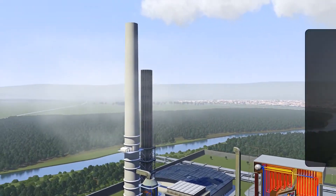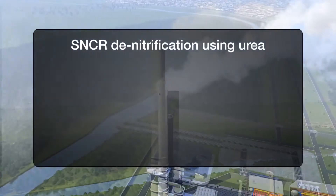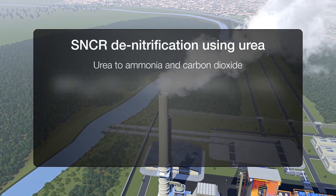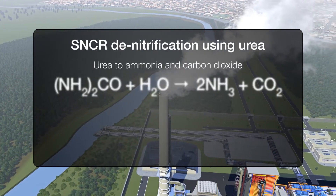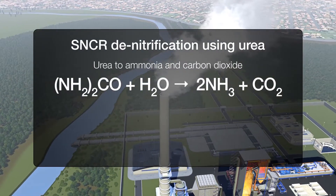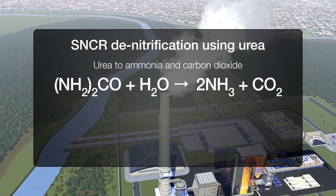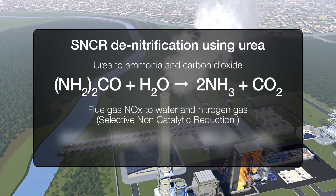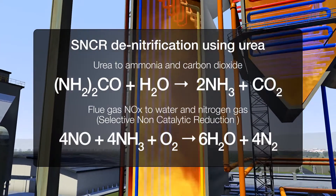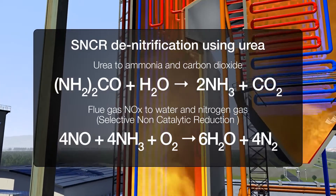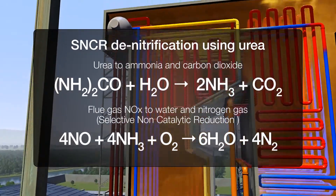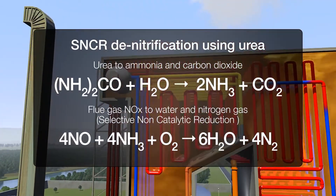Selective non-catalytic reduction, or SNCR, plants are less efficient, removing around 70% of NOx, but use urea which is cheaper and easier to use than ammonia. The urea is added to the furnace to break the NOx down into nitrogen, carbon dioxide, and water.